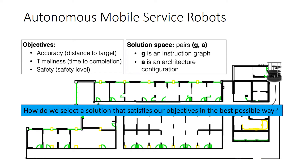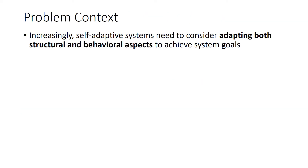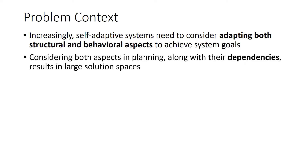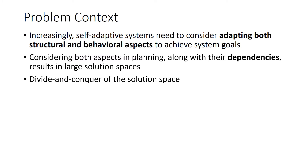How do we go about selecting a solution that satisfies our objectives in the best possible way? This question doesn't have an obvious answer. Although our example is in the domain of autonomous mobile robots, many other classes of self-adaptive systems increasingly need to consider adapting both structural and behavioral aspects to achieve their goals. Accounting for these dependencies in adaptation decision-making poses a challenge because of the size of the combined solution spaces for architecture reconfiguration and task replanning, which can easily become too large to adequately explore at runtime.